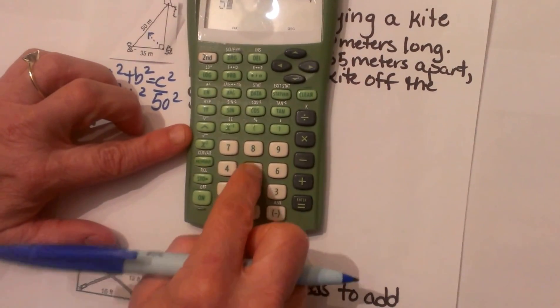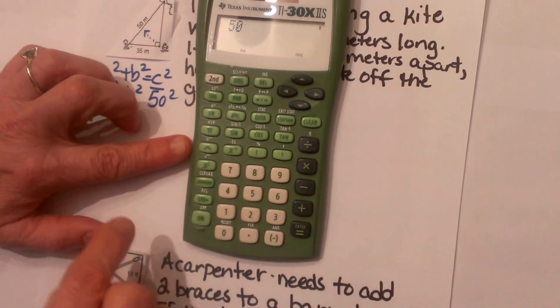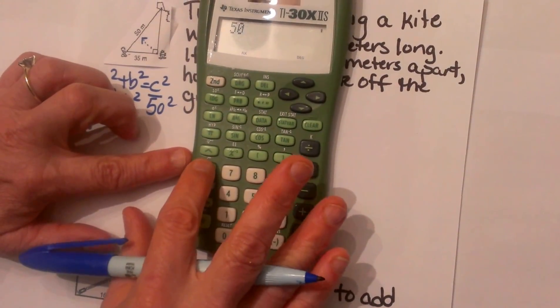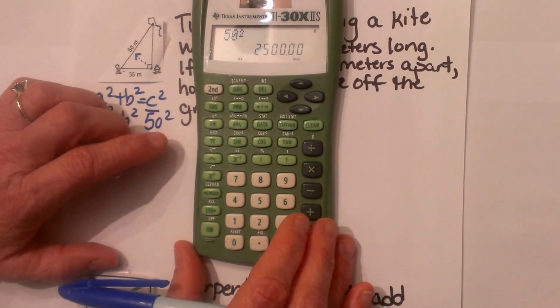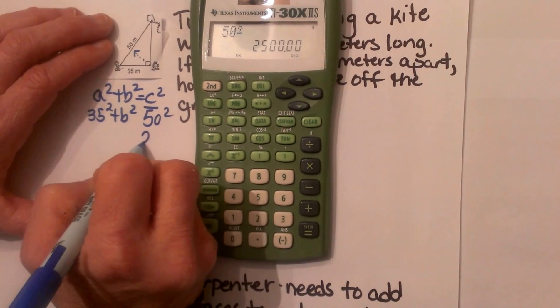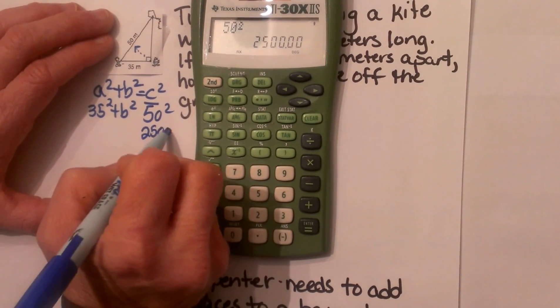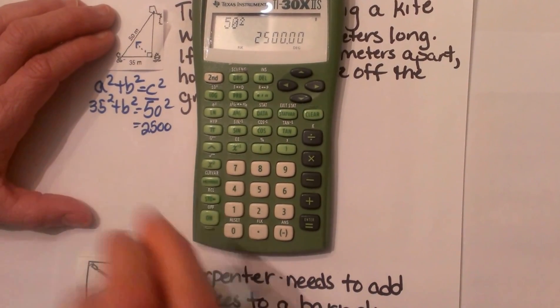So you are going to click this button and that gives me 2500 and I am going to take 35 and square it.